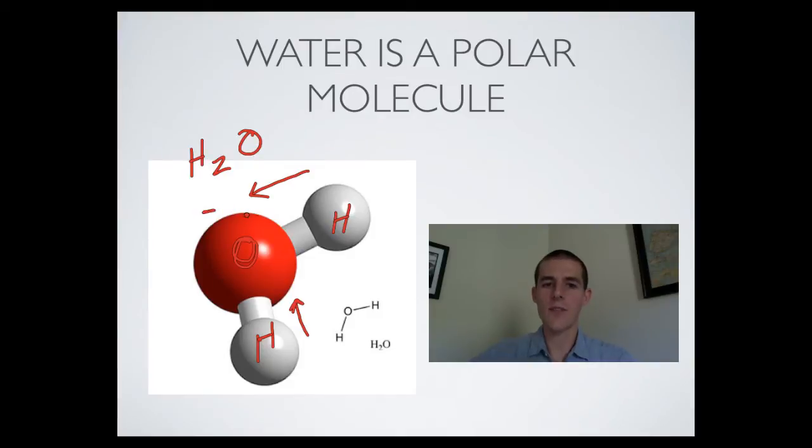So as the oxygen is pulling the electrons towards itself, because electrons are negative, it gets a negative charge. Hydrogen, because it's losing its negative electrons, gets a positive charge.